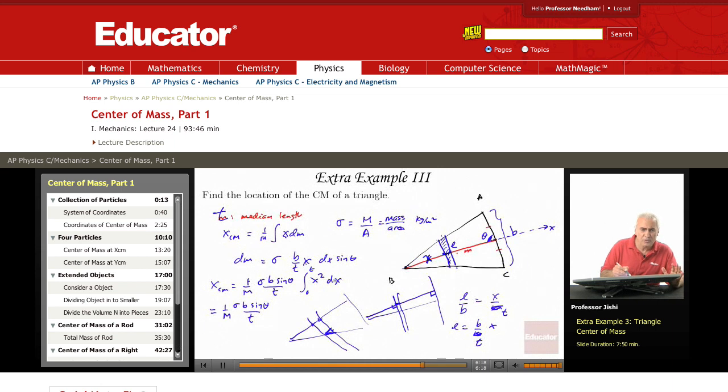So this is x cubed over 3 from 0 to t. So this is just t cubed over 3.